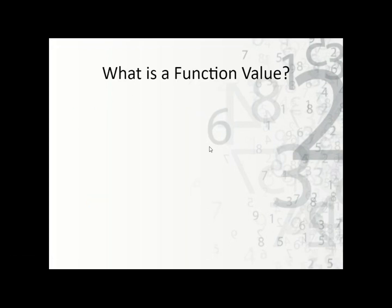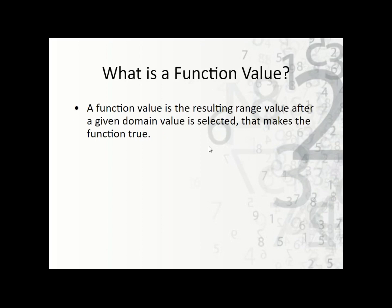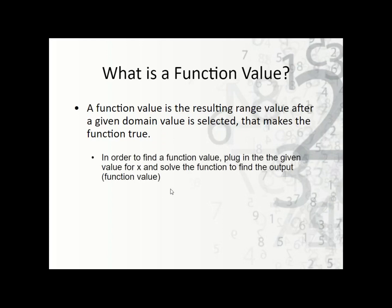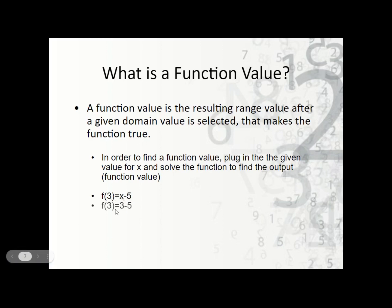What is a function value? A function value is the resulting range value — the y value — after a given domain value is selected that makes the function true. To find a function value, we plug in the given value for x; the function value is the result or output. For instance, if I have f of 3 for the function f(x) = x minus 5, I plug 3 in for x and get 3 minus 5, which is negative 2. So negative 2 is my function value.